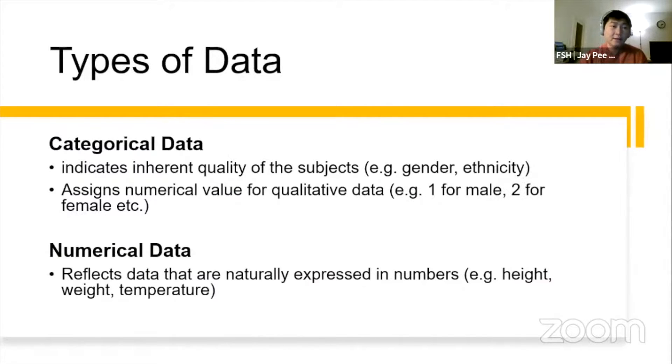One determinant on how we choose the right statistical method is the type of quantitative data, and there are different types of quantitative data. One is categorical and numerical data. You might want to ask about categorical data which indicates the inherent quality of the subject, for example, gender or ethnicity, nationality, how does it become quantitative?